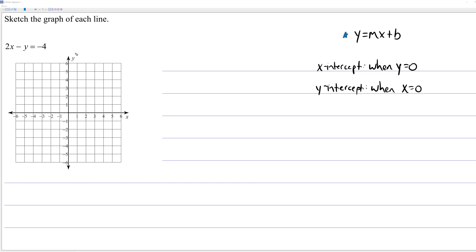So one strategy for graphing this line would be we could solve for y, we could get y by itself, thus converting the equation of the line to slope-intercept form. We're going to do that in the next example. In this one, I'm going to show you a technique where you can find the x and y-intercepts of the line in order to graph it.